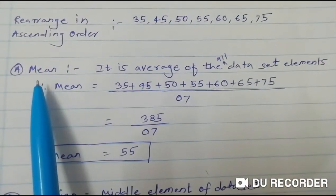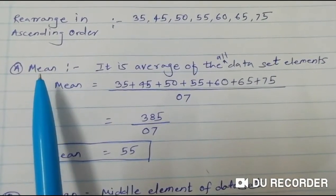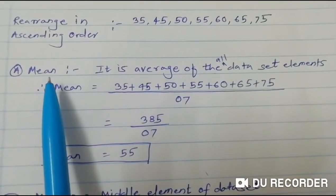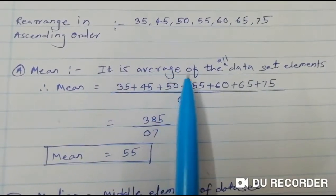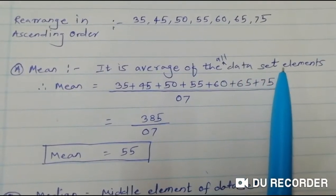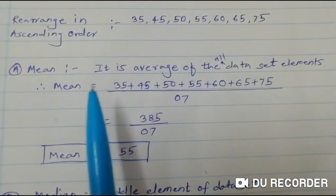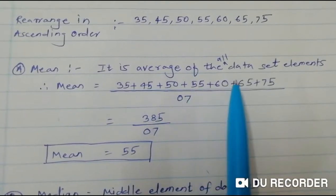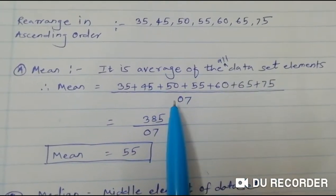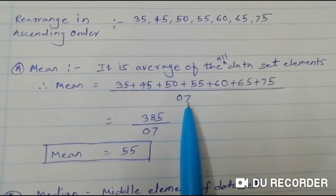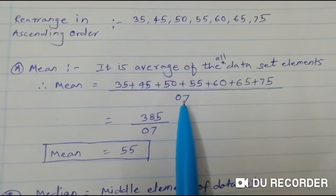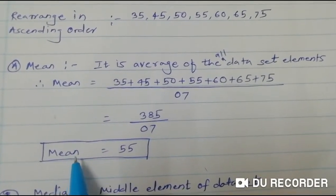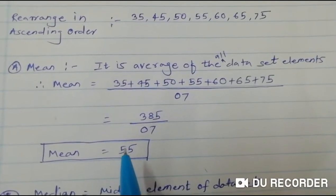Now we will see the first part, that is mean. So how to calculate the mean value? Mean is nothing but the average of all the data set elements. To calculate mean, we sum all the data set elements and divide by the total number of elements, which is seven. In this way we have calculated the mean, that is 55.